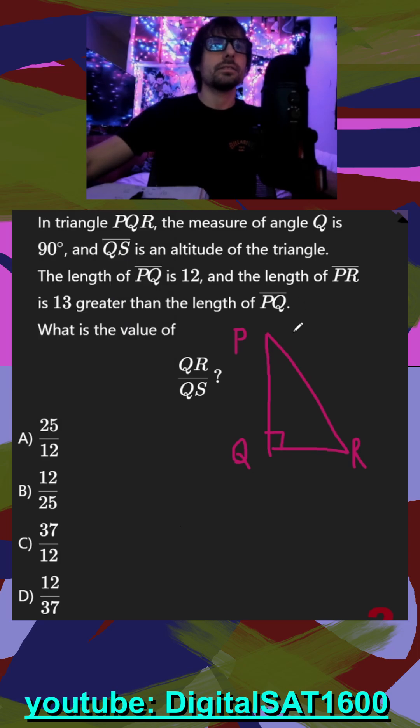They tell us that QS is an altitude. So we have angle Q already, and we can just make up that S is like over here. And an altitude is always going to form a 90 with the side that it's intersecting.